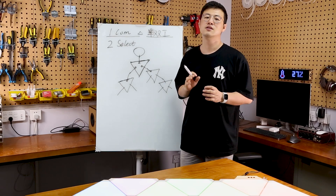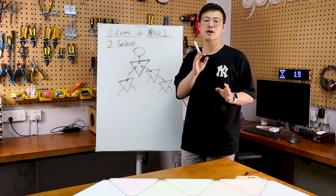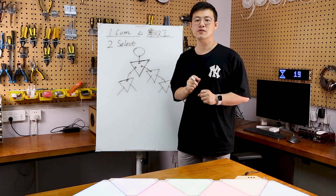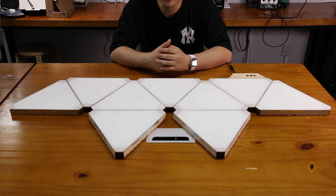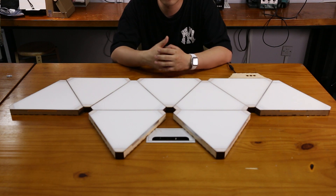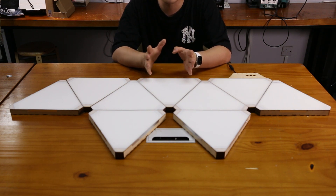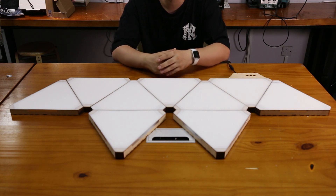因为我们这个节目更多是一种科普性质的，所以我们在这儿还是那句话，不对代码做系统的研究。接下来我们一起来看一下漆光板的自动寻址过程。为了更方便的观察效果，我把每一块板子查找的时间拉长了一点点，而且找到这块板子以后它会发白光。我们一起来看一下。